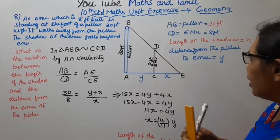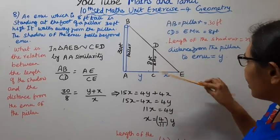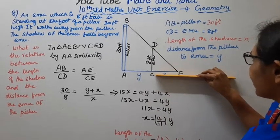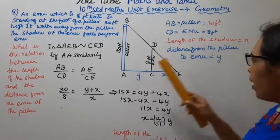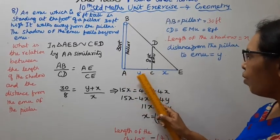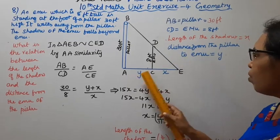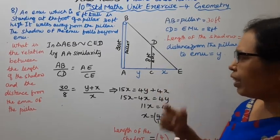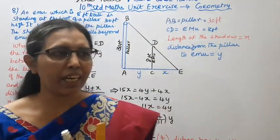Emu is here. Length of the shadow is X. Distance from the pillar, this is the walk. Distance from the pillar to emu is Y. This is easy, similar triangle we will do it.